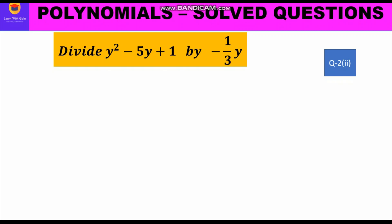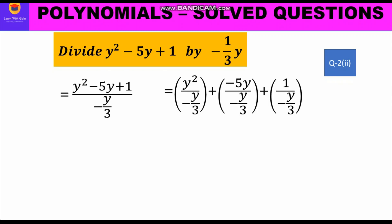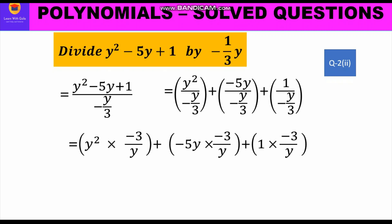Now let us move to the second part. It is given: divide y square minus 5y plus 1 by (-1/3)y, which can also be written as -y upon 3. Writing in fraction form, y² - 5y + 1 upon (-y/3), each term of the polynomial in the numerator will be divided by the monomial -y/3. So we write y square upon (-y/3) plus (-5y) upon (-y/3) plus 1 upon (-y/3). The fractions in the denominator will be reciprocated.